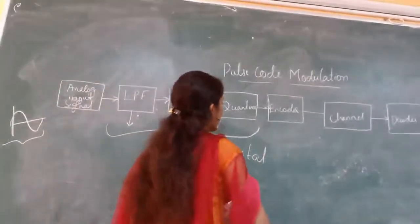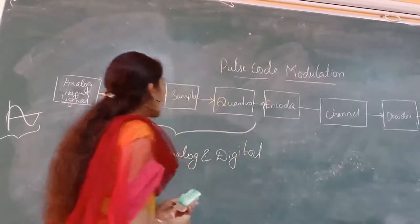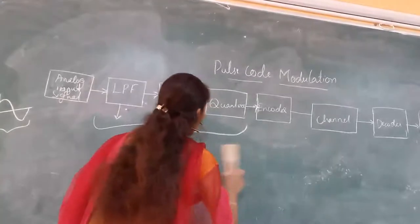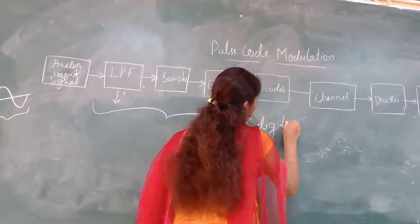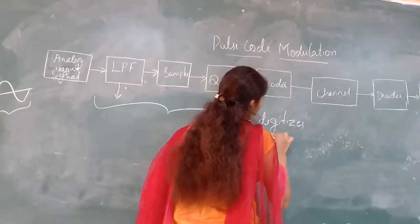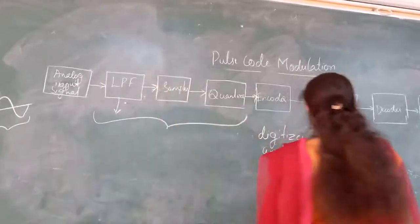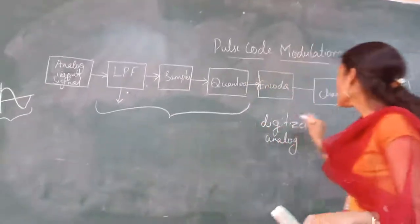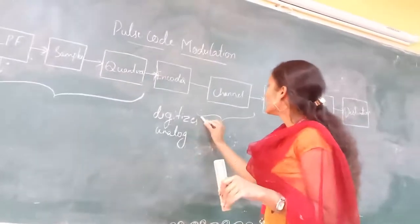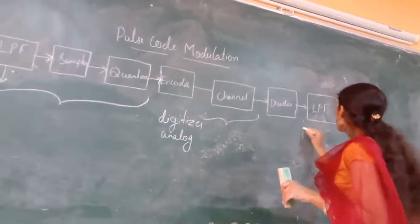The quantized output is given to the encoder. What does the encoder do? It digitizes the analog signal. That digitized signal is passed through the transmission path. In pulse code modulation, we have three sections: transmitter, channel, and receiver. The channel is used for transmitting the digitized output to the receiver section.